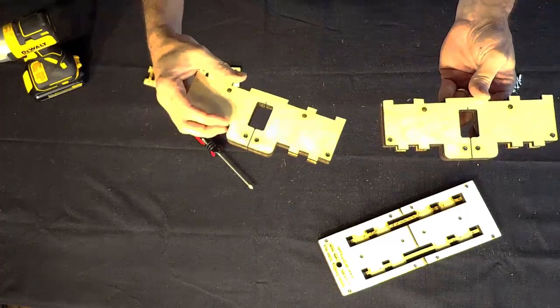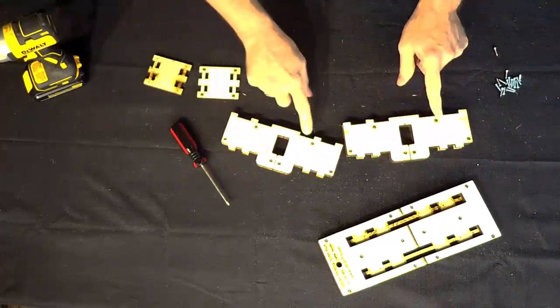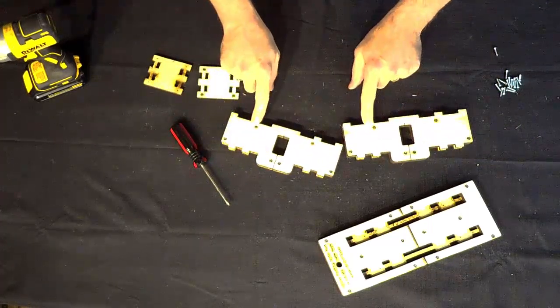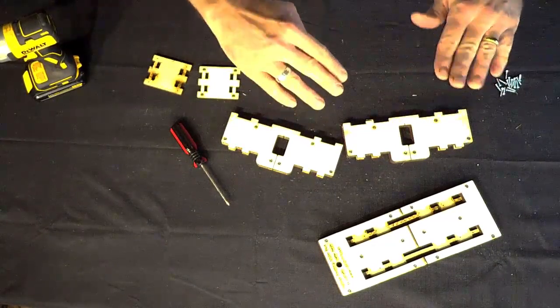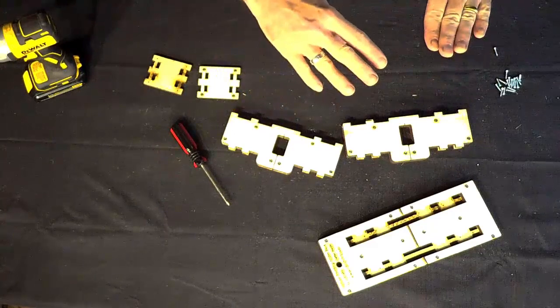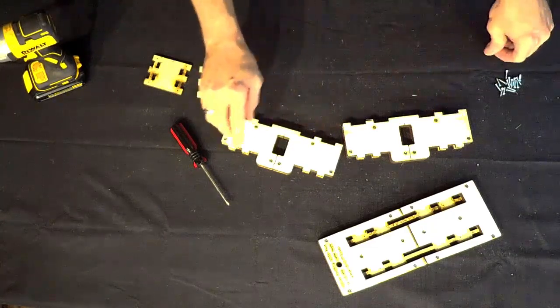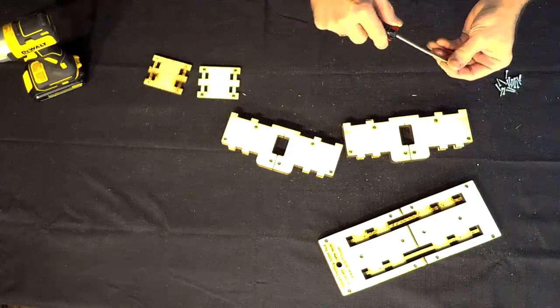Once you have the side pieces removed, you can put in the final four screws here on these lower holes. It is very important that these screw heads be flush or ideally slightly countersunk beneath the surface of the wood to get these panels back in.